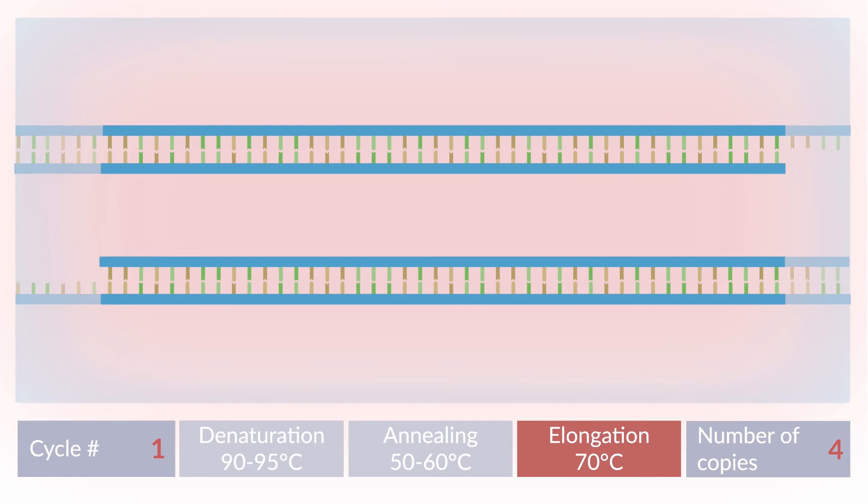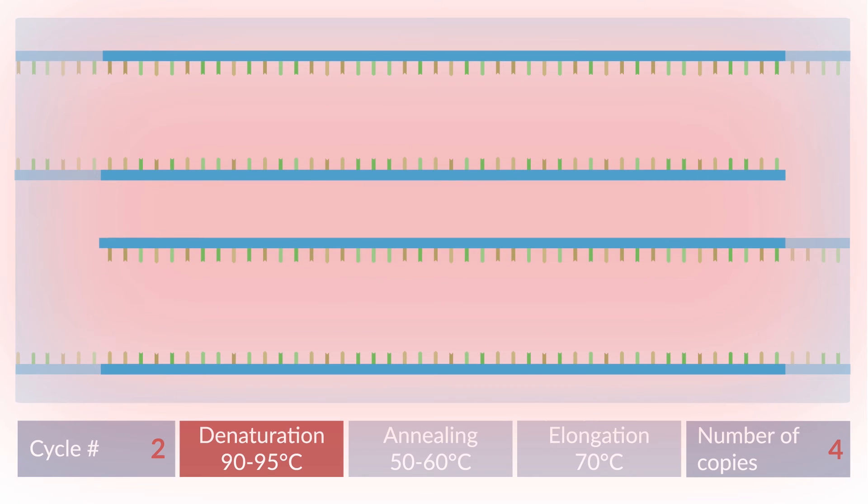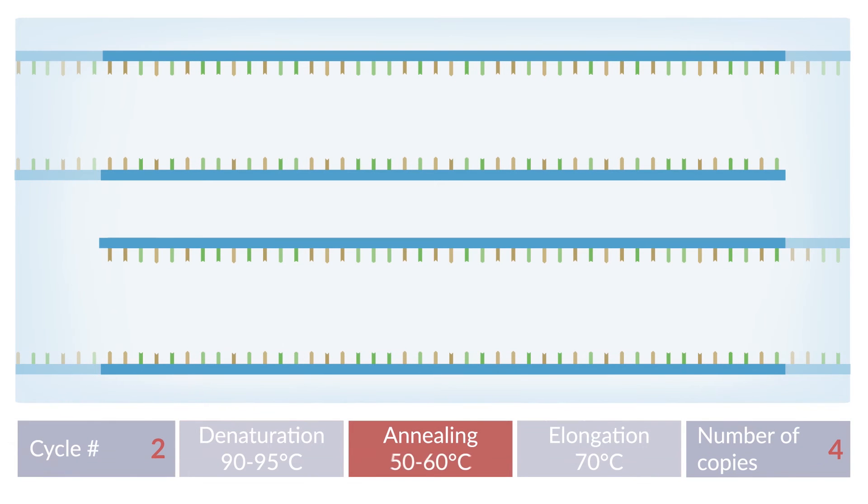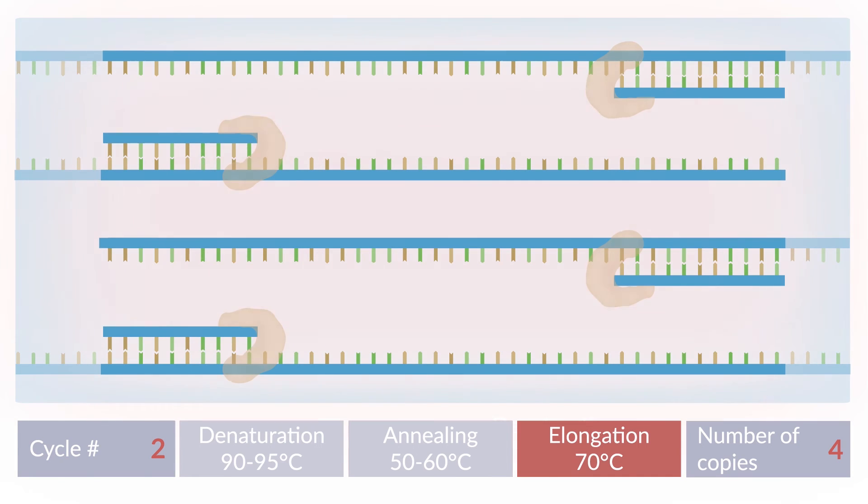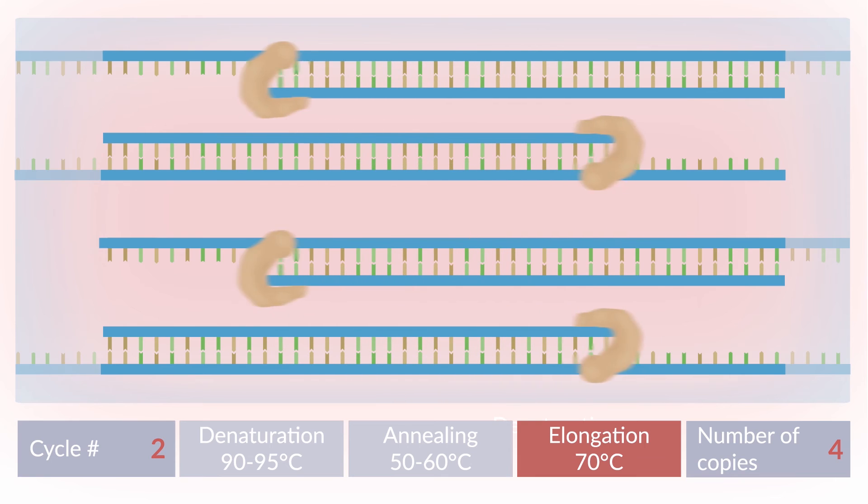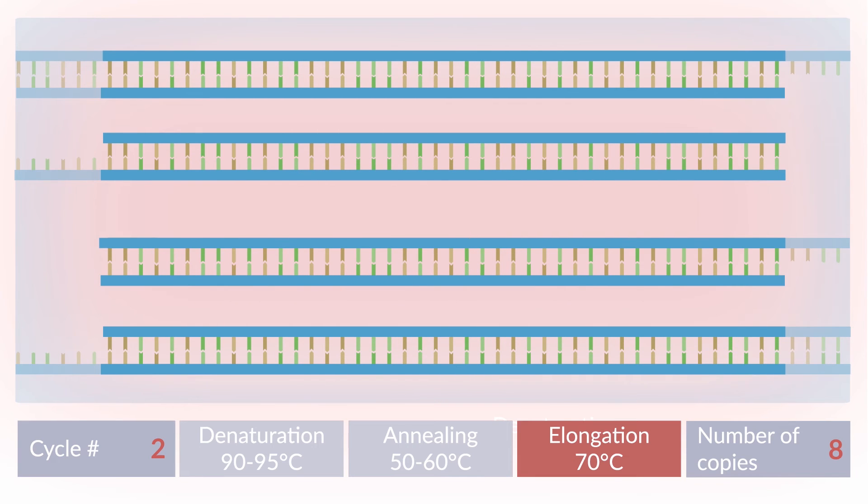During the second cycle, the temperature is increased again to 90 to 95 degrees Celsius. The double-stranded DNA molecules in the reaction mixture denature. Next, the temperature is decreased to the annealing temperature again. The primers dock onto their specific DNA sequences. DNA polymerase then synthesizes the complementary DNA strands at approximately 70 degrees Celsius.